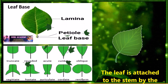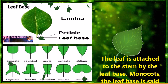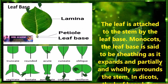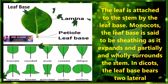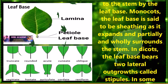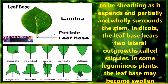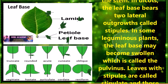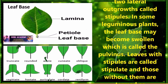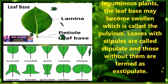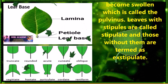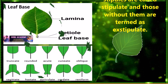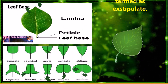Let us discuss about the leaf base. The leaf is attached to the stem by a leaf base. In monocots, the leaf base is said to be sheathing as it expands and partially or wholly surrounds the stem. In dicots, the leaf base bears two lateral outgrowths called stipules. In some leguminous plants, the leaf base may become swollen, which is called the pulvinus. Leaves with stipules are called stipulate and those without them are termed as exstipulate.